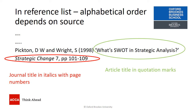So what happens in the reference list? Well, the reference list is presented in alphabetical order. Because this is an academic article, we give Picton and their initials, the date 1998, and then we include the title of the academic article in quotation marks. We give the journal title in italics with page numbers. So the title is given within quotation marks and the journal in italics. That way we recognize which part is the journal title and which part is the actual article title. Remember, your reference list is presented in alphabetical order.